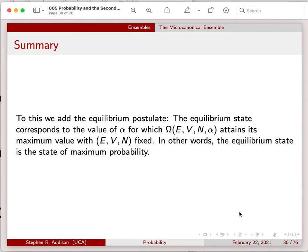To this we add the equilibrium postulate. The equilibrium state corresponds to the value of α for which Ω(E, V, N, α) attains its maximum value with E, V, and N fixed. In other words, the equilibrium state is the state of maximum probability.